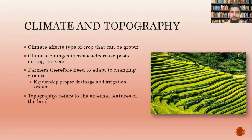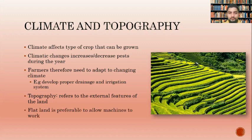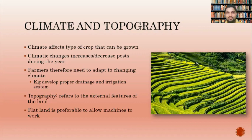Topography refers to the external features of the land — its shape, slope, hillsides, and so forth. Some mountainous regions are very difficult to cultivate. It is preferable to grow crops on flat lands because machines like tractors can work there. Sloped areas and mountain ranges make it very difficult for machines to operate. In hilly terrain, what is practiced is called terracing, shown in the image on the right.